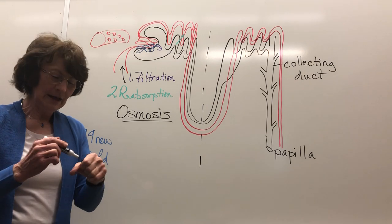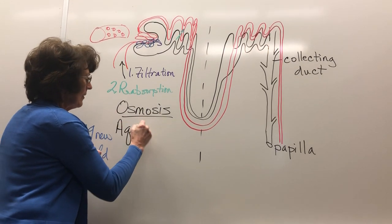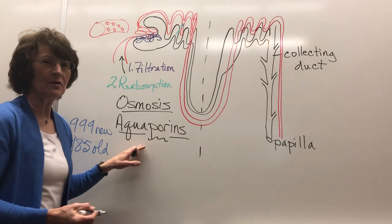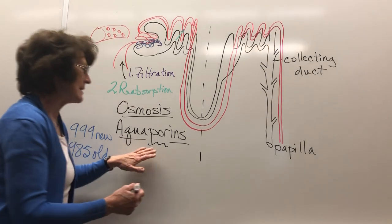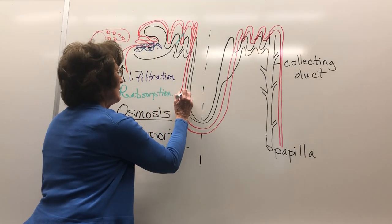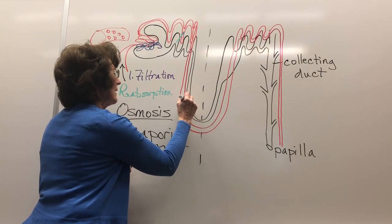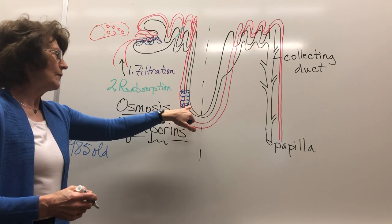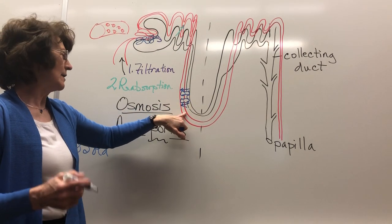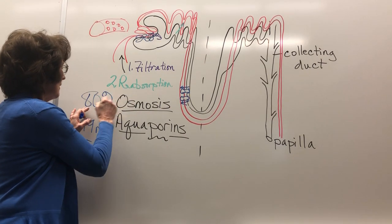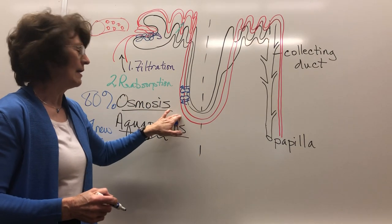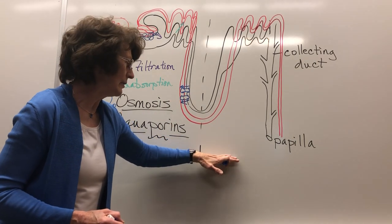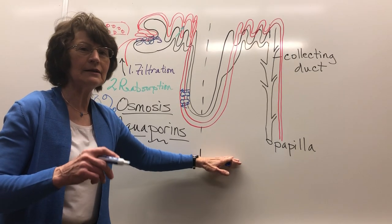How is the water coming across? That's where aquaporins come in. Aquaporin means water channel — a pore — and it's a protein. The aquaporins take water from the tubule, from the descending limb, into the capillary. This accounts for 80% of water reabsorption. This side of the line is permeable to water.